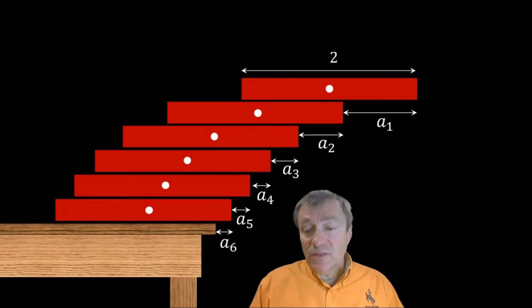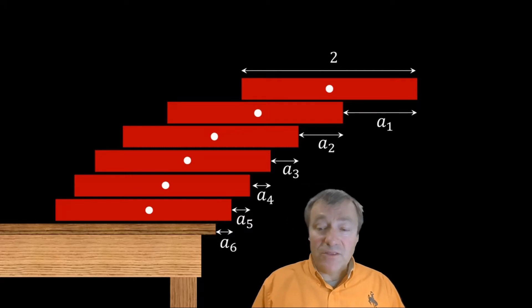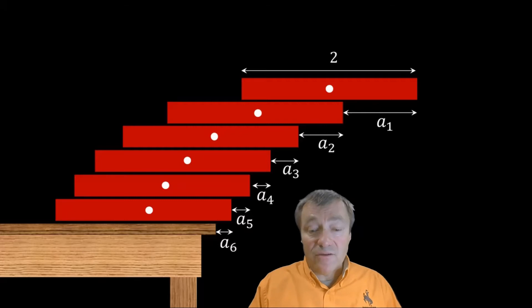So, I will assume that the top brick extends A1 units beyond the second brick. The second brick extends A2 units beyond the third brick, which extends A3 units beyond the next brick, and so on. By the way, it's easiest to start numbering the bricks from the top of the stack rather than from the bottom.